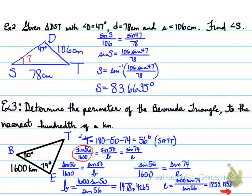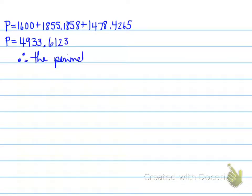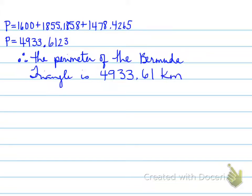We haven't finished this question yet. We need to find the perimeter. We add up all the sides we discovered, plus the original one, keeping four decimal places, and we get 4933.6123. Therefore, the perimeter of the Bermuda Triangle is 4933.61 kilometers. We rounded because the question asked for the nearest hundredth, which is two decimal places. That's the end of the sine law video. Take care. Have a numerical day.